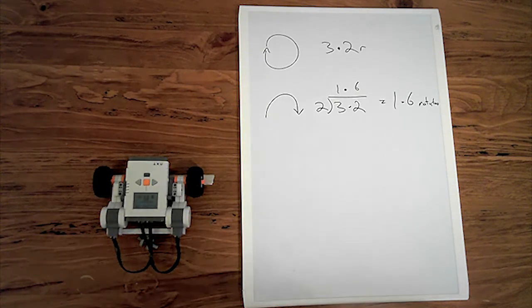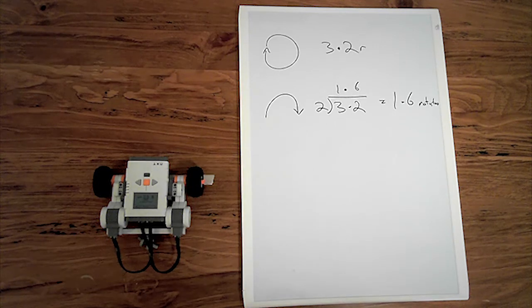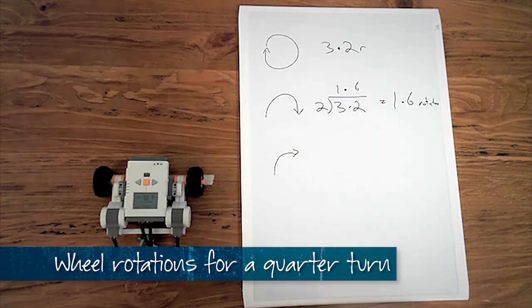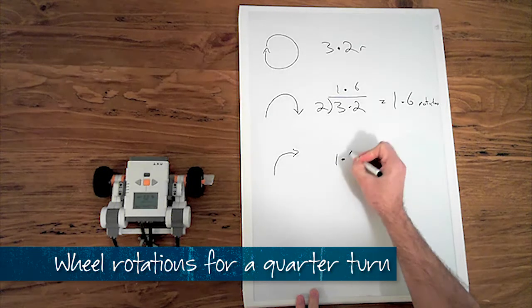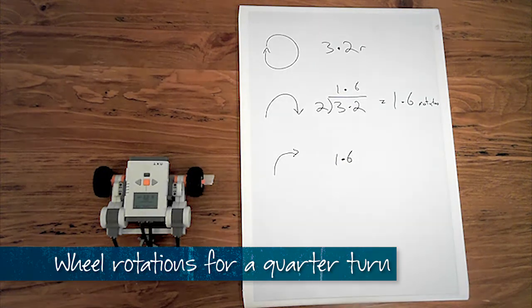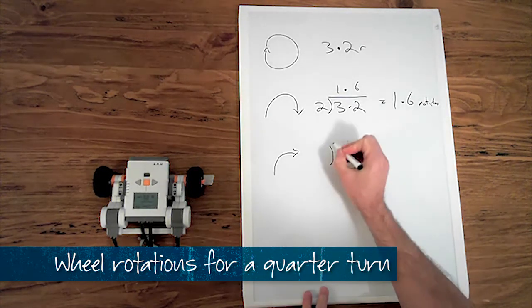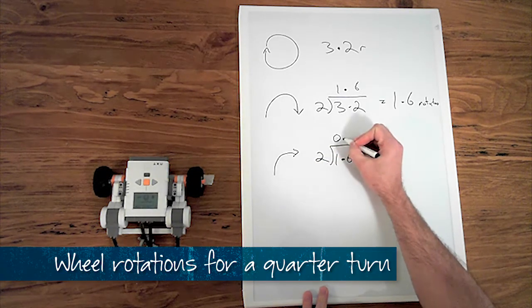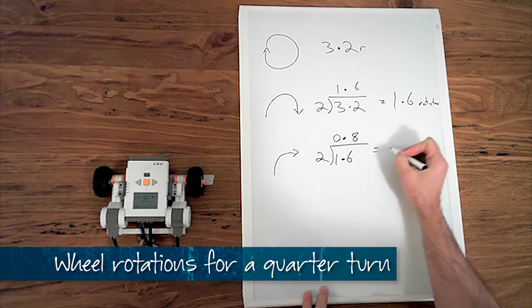If we want to go from our half turn now to a quarter turn, we are going to take that 1.6 rotations that we needed for the half turn and again divide by two to get our quarter turn. This will give us 0.8 rotations.